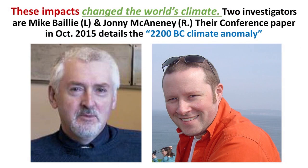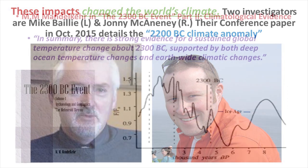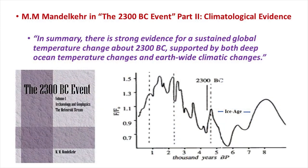These impacts not only wiped out civilizations, they changed the world's climate. Drs. Mike Bailey and Johnny McEnany presented a conference paper in October 2015 detailing the 2200 BC climate anomaly. This was also investigated by Maui Mandelker, whose publication entitled 'The 2300 BC Event, Part 2, Climatological Evidence' concludes: 'In summary, there is strong evidence for a sustained global temperature change about 2300 BC, supported by both deep sea ocean temperature changes and earth-wide climatic changes.'